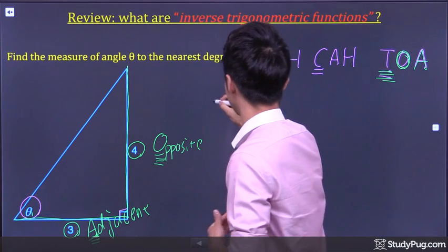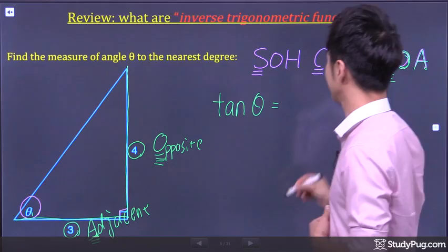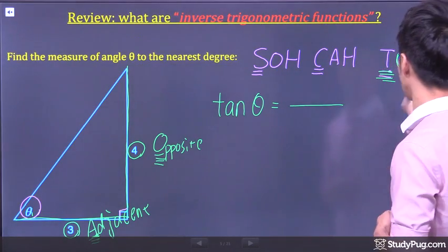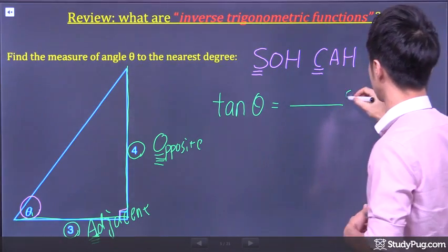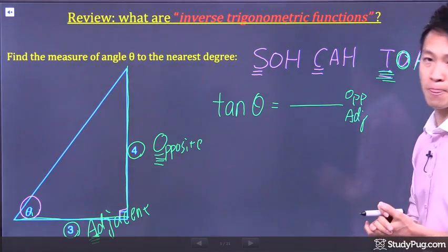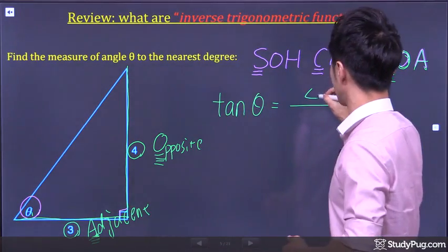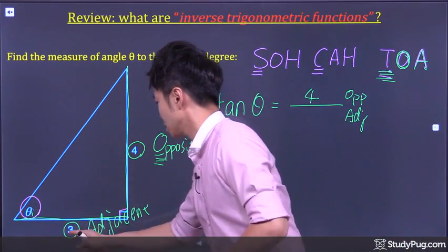Okay? So let's write it out. So we should use tangent function. And what's tangent? Tangent is opposite over adjacent. In this triangle, the opposite is 4, the adjacent is 3.